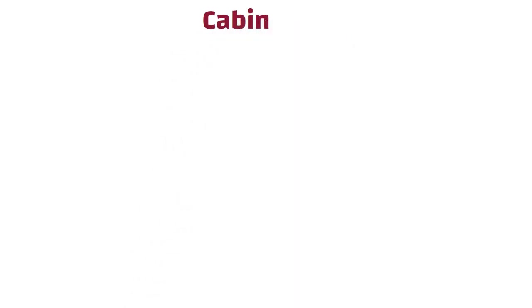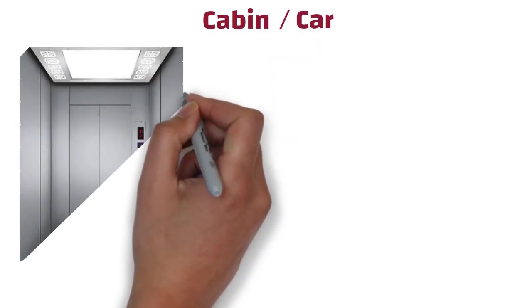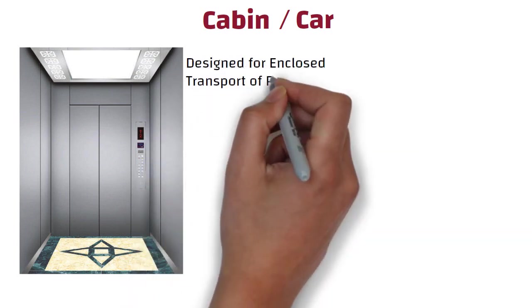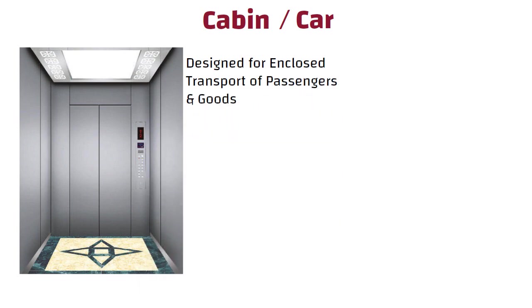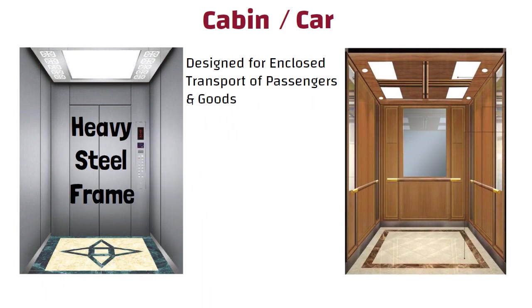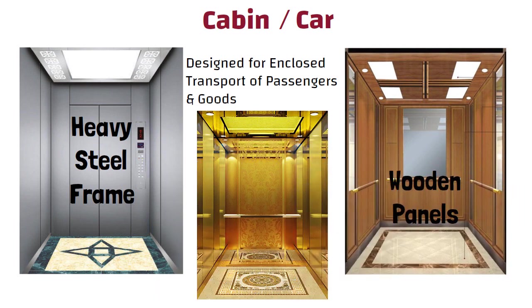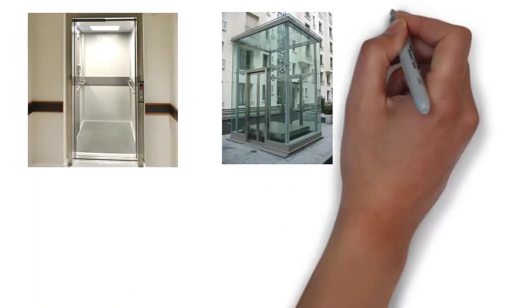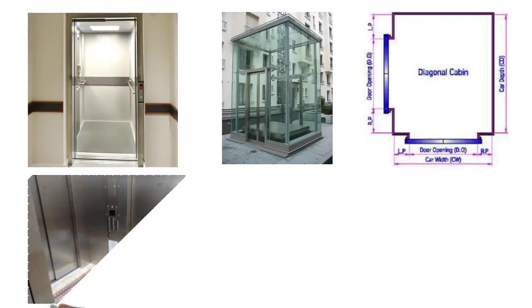Cabin. It is also known as car. This is the main part of the elevator which is designed for the enclosed transport of passengers and goods. It is usually a heavy steel frame surrounding a cage of metal and wooden panels. The cabin is the place where the passenger truly experiences the elevator. Cabin can be of one opening, two opening, angle opening, and three entrance types.